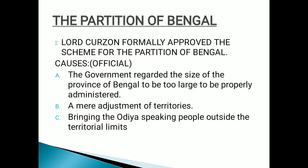Publicly they said Bengal was a very large province and controlling it was really tough for them — that's why they were dividing it. They also said it was merely an adjustment of territories, saying 'don't give it the name of partition, we are just adjusting the territories of Bengal.' Third, they wanted to bring the Odia-speaking people within the territorial limits. These were all the reasons they gave publicly for why they were partitioning Bengal.